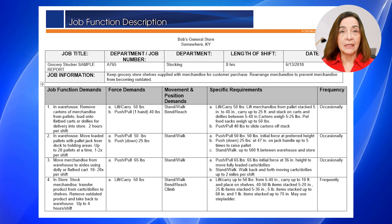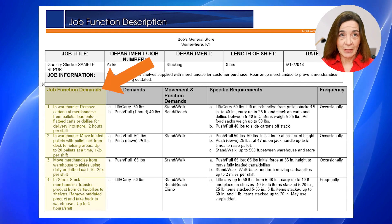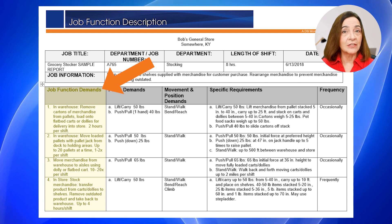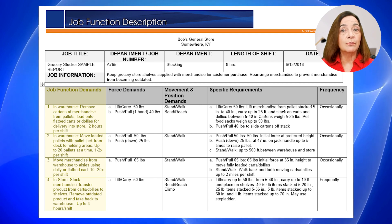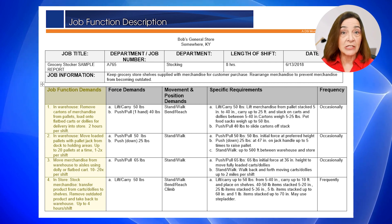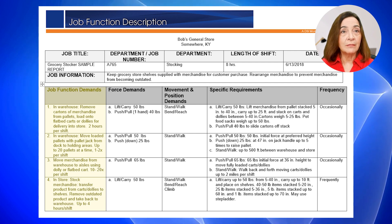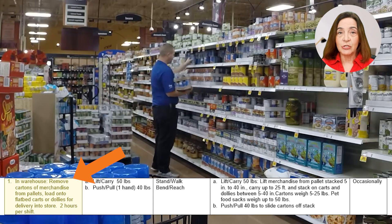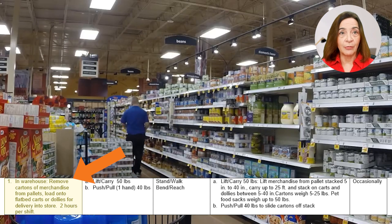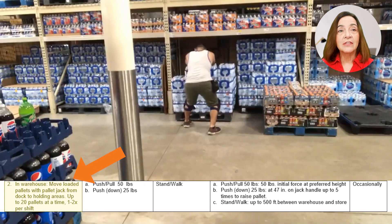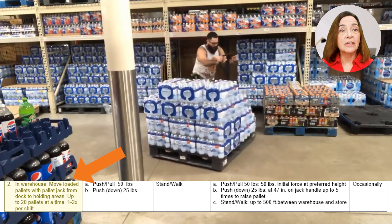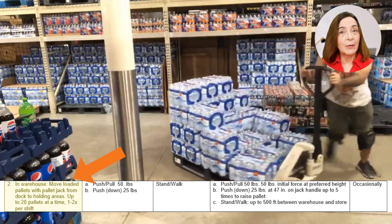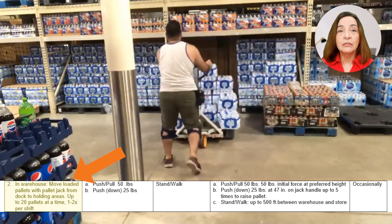In this case you will see that we have four job function demands — that's the column here on the left — and each of those represents a critical component of what a grocery stocker must do. The first involves working in the warehouse, moving cartons of merchandise from pallets onto dollies or carts in preparation for transporting them into the store. The second essential function is still in the warehouse and involves moving pallets dropped by trucks into different holding areas.